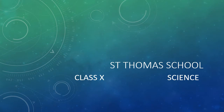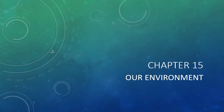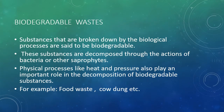Hello students. In this class, we will learn Chapter 15, Our Environment. In class 9, we saw how different materials are cycled in the environment in separate biogeochemical cycles. In these cycles, essential nutrients like nitrogen, carbon, oxygen and water are changed from one form to another. We shall now see how human activities affect these cycles.